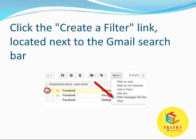Next, click the 'Create a filter' link located next to the Gmail search bar, as you can see in the image.